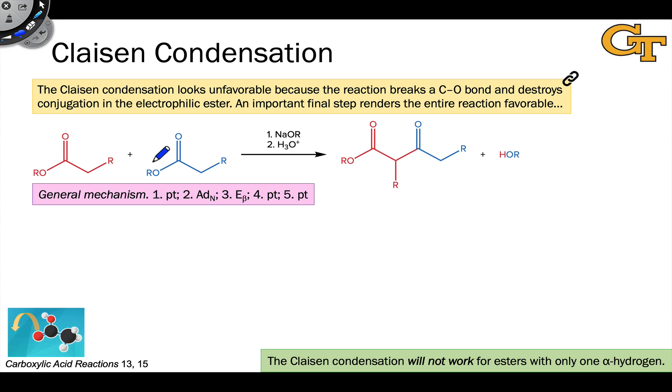In the last video, we noted that the simple Claisen condensation looks unfavorable because the reaction breaks a C-O bond and destroys conjugation within the ester. Notice that we have resonance structures involving the ester alkoxy oxygen in the starting ester, but in the product, the carbonyl group that becomes part of a ketone no longer has this resonance. This is one reason why the Claisen condensation, at least at face value, looks unfavorable.